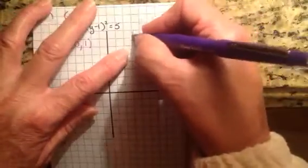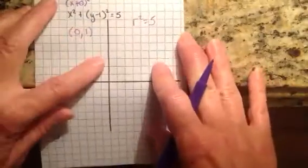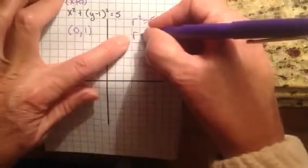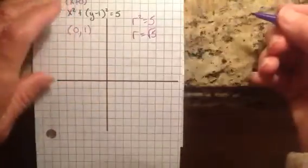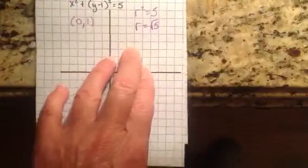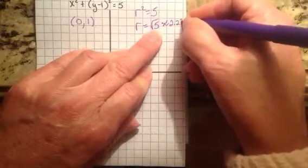And remember, this is what I cautioned you about. r squared equals 5. So if r squared equals 5, I need to take the square root. So my r is going to be the square root of 5. Well, how do I go over the square root of 5? You can use your calculator for that. And that's roughly 2.23.